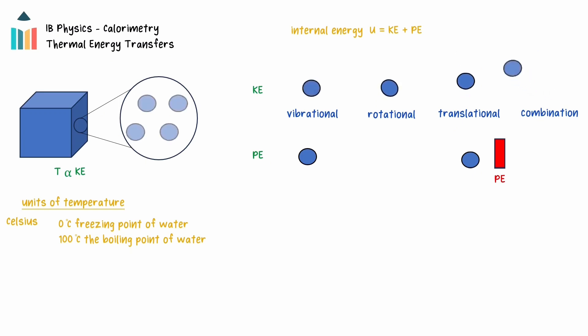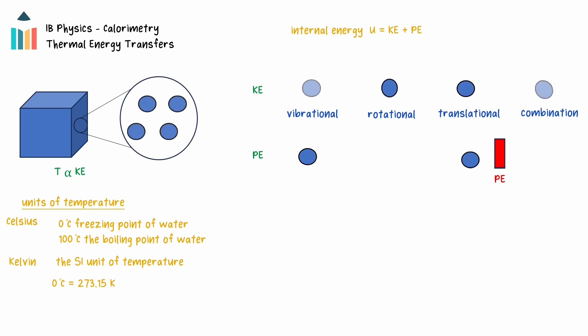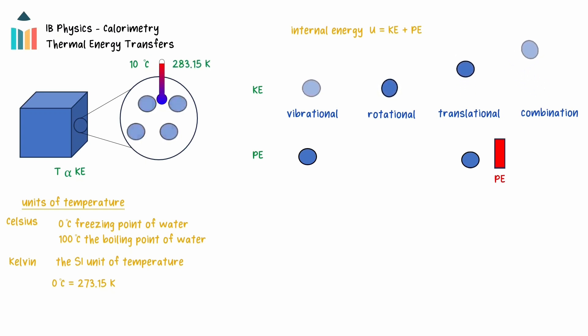The SI unit of temperature is the Kelvin, which sets the lowest possible temperature at zero Kelvin. Zero degrees Celsius is equal to 273.15 Kelvin. Although the Kelvin and Celsius temperature scales are offset, the magnitudes of the unit are the same. So if an object's temperature increases from zero degrees Celsius to 10 degrees Celsius, it will have increased from 273.15 Kelvin to 283.15 Kelvin. The increase in both temperature scales will be 10 units.